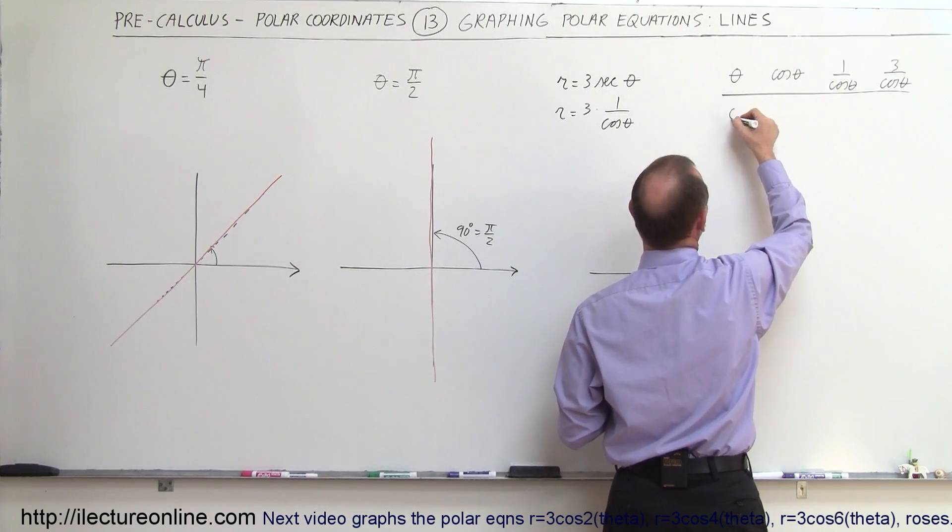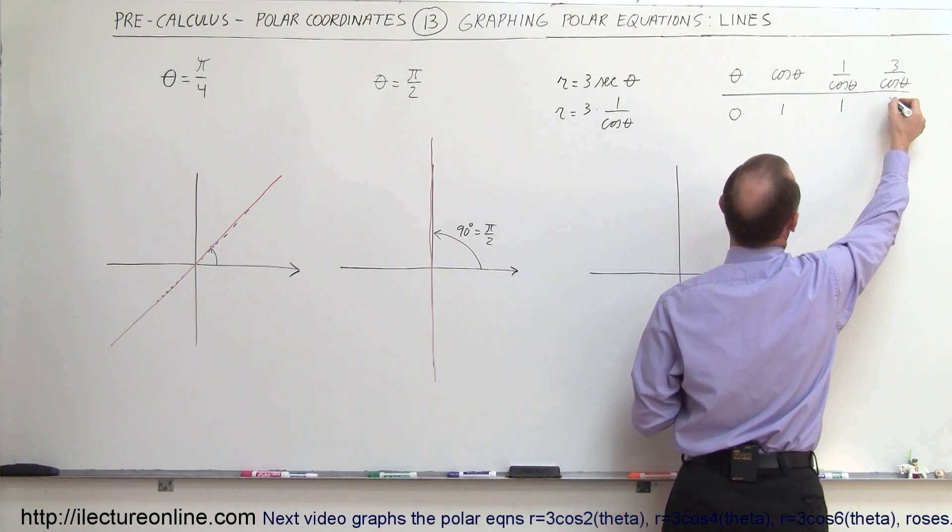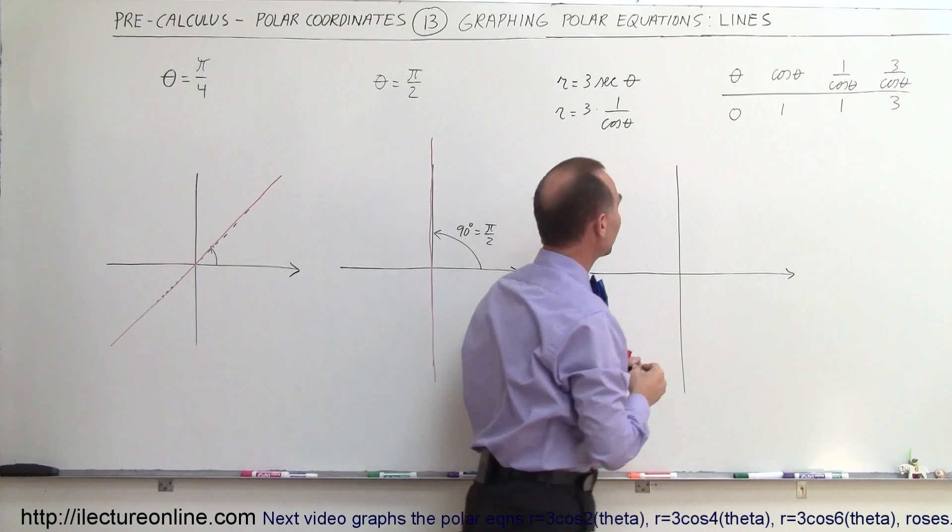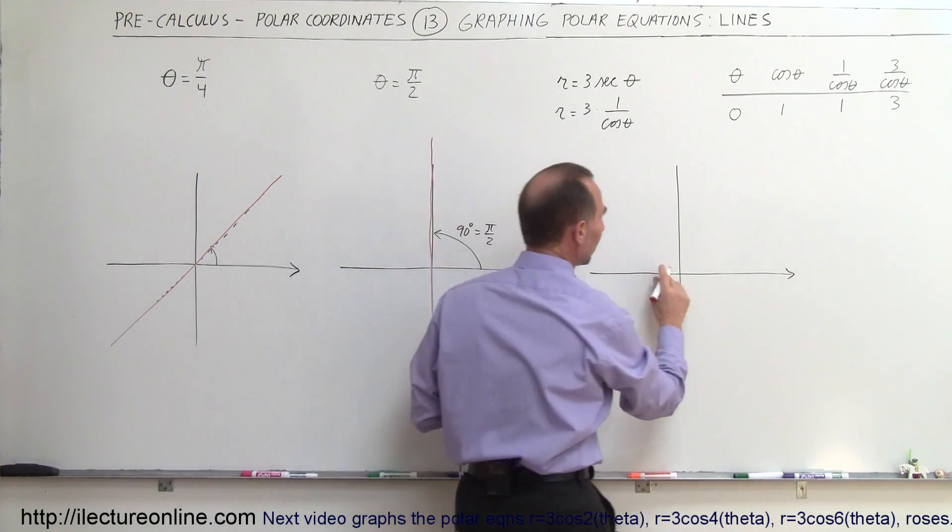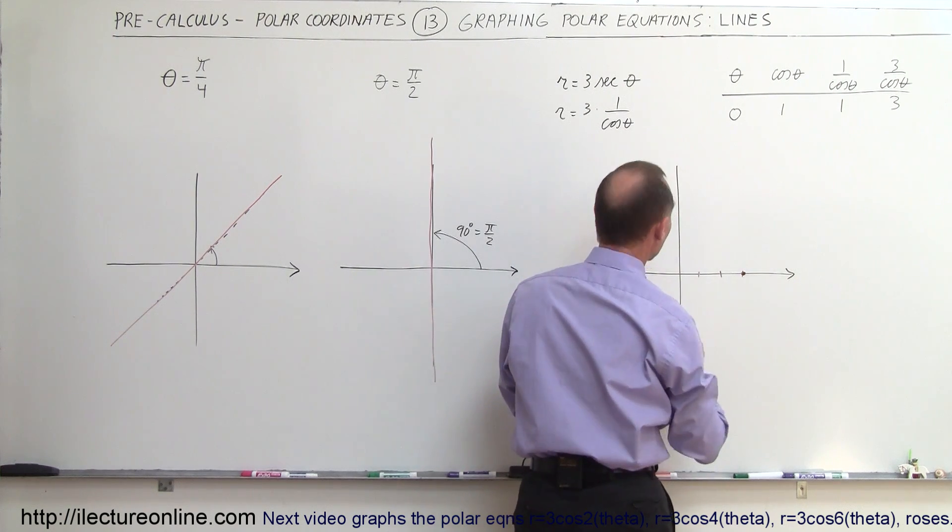If theta is equal to 0, then the cosine of theta is 1. 1 over that would be 1, and 3 times that would be 3. So our first point would be, for an angle of 0 degrees, we come over here, would be 1, 2, 3 units. So we have a dot right there.